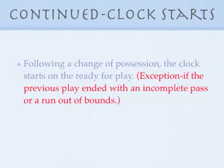Following a change of possession, the clock starts on the ready for play. The exception is if the previous play ended with an incomplete pass or a run out of bounds. For example: fourth and ten for team A at the 50-yard line. The quarterback drops back and throws an incomplete pass. The ball is awarded to team B because team A failed to make the line to gain on fourth down. Because the previous play ended with an incomplete pass, the clock would start on the snap.